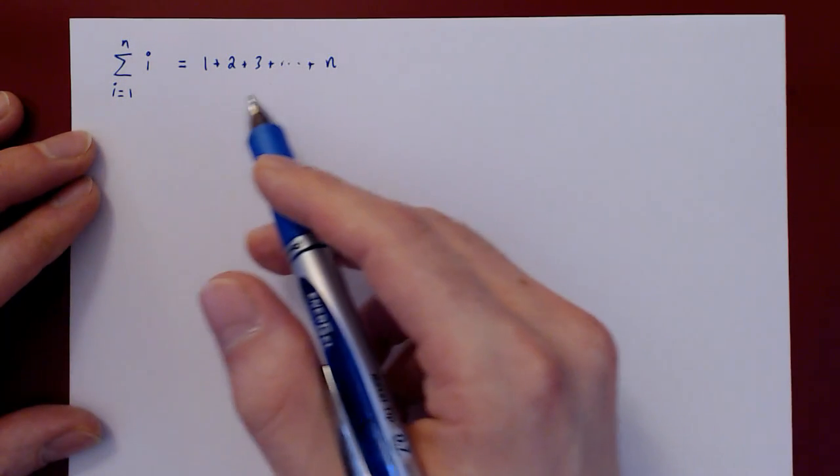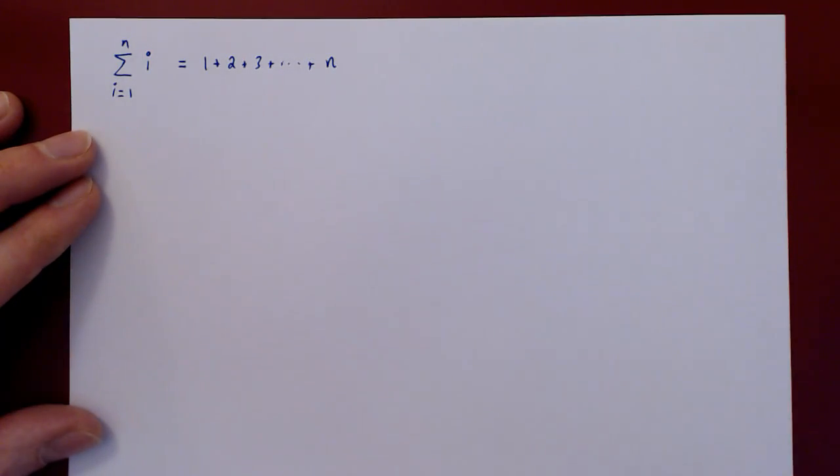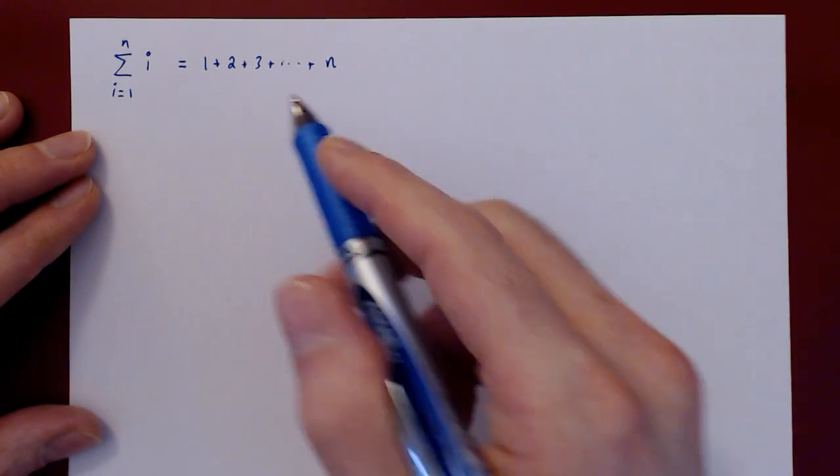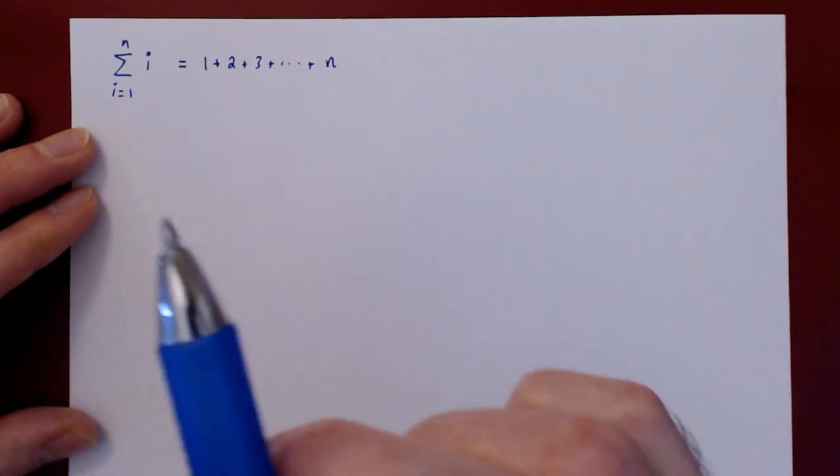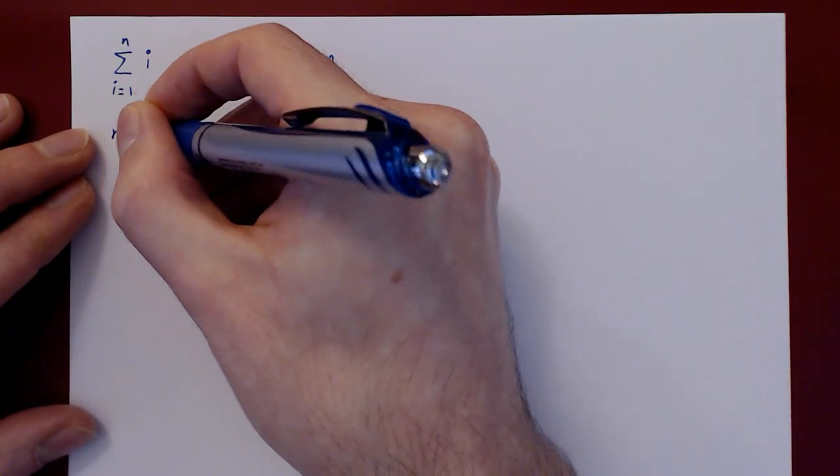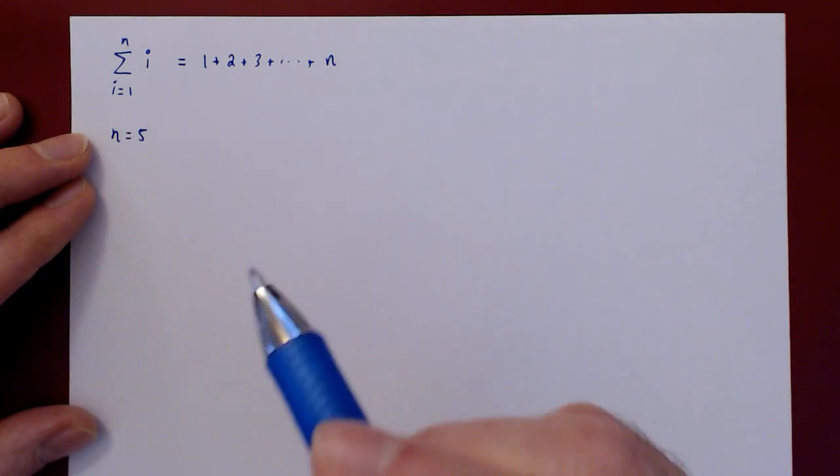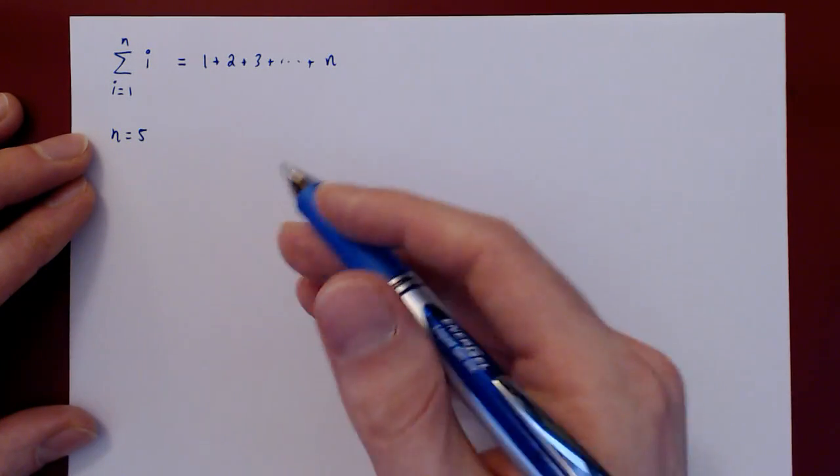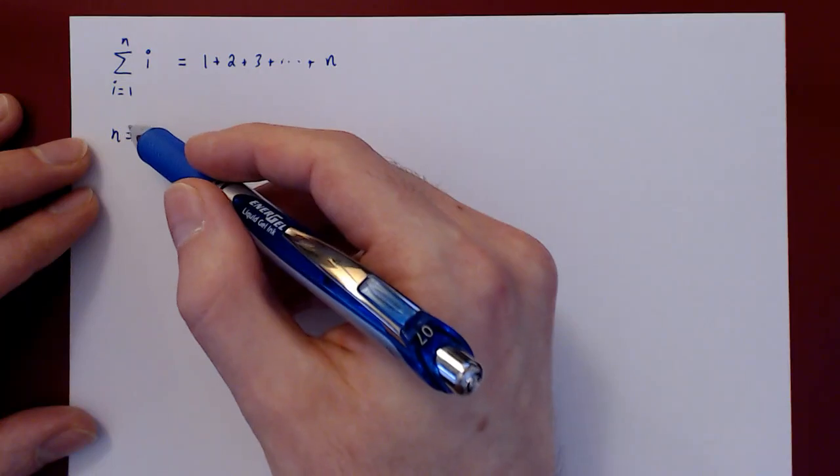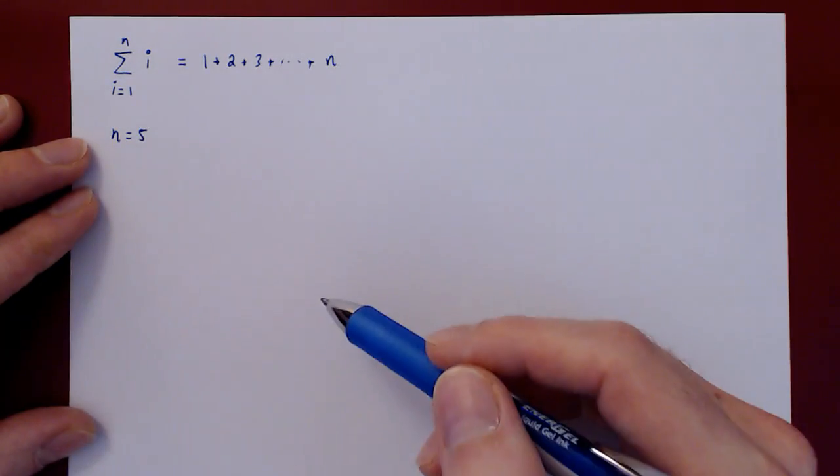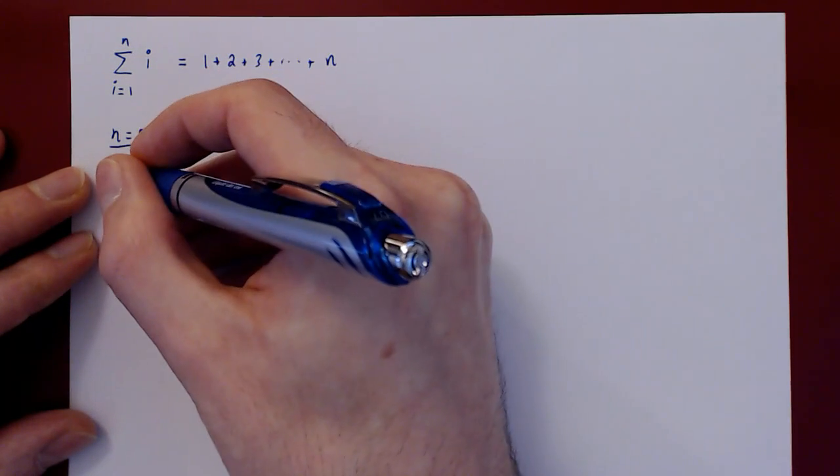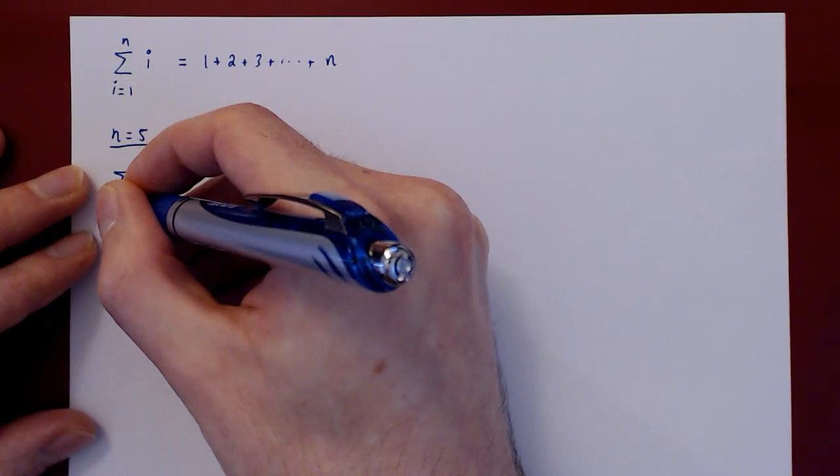Now we want to visualize the sum. You will see that we will provide a geometric argument in giving us two different ways of counting this expression. To make the picture easier to understand, we will take here the special case when n equals 5. And you will see why in a second.